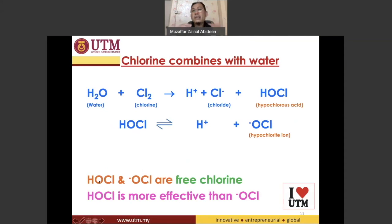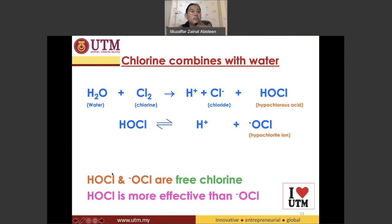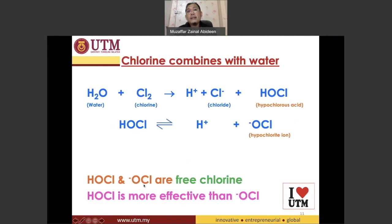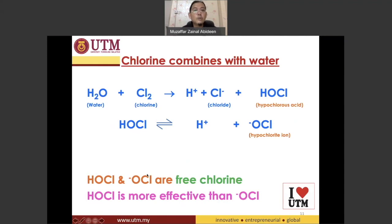To make a simple analogy: hypochlorous acid is like a first-class student — it's very good. Compared to the hypochlorite ion, which is like second-class upper — not that bad, but hypochlorous acid is better than hypochlorite ion.